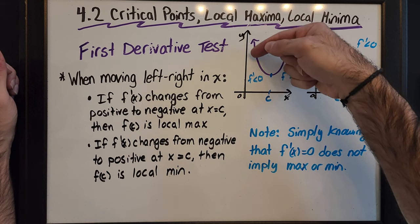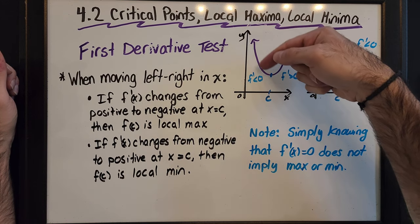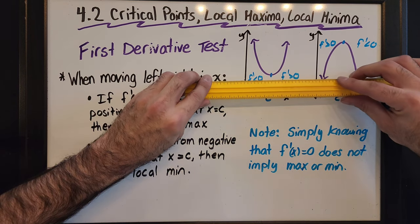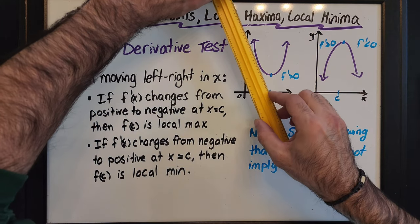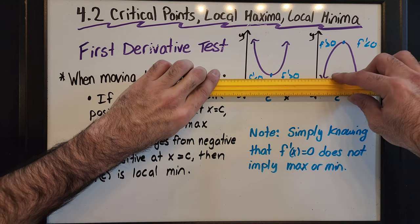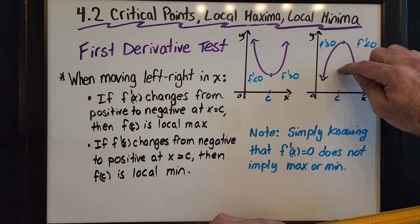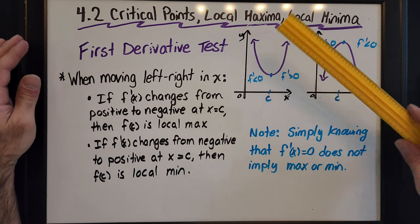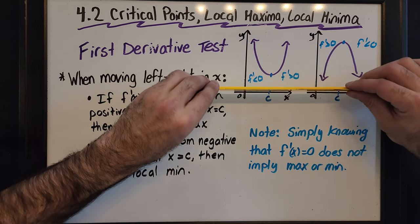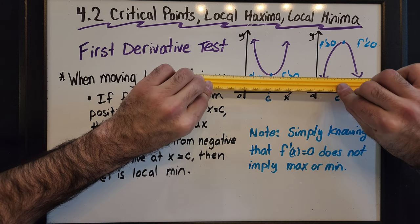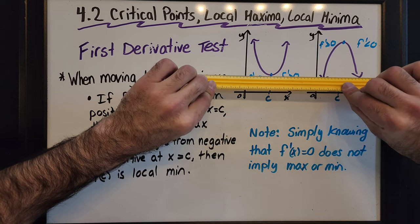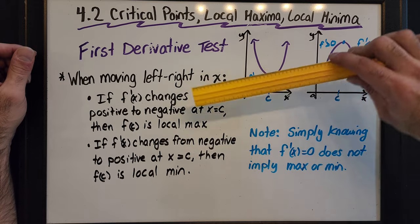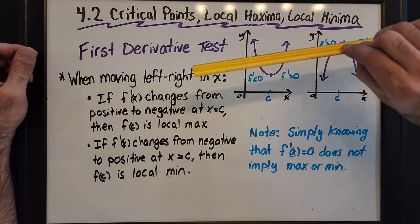Let's take a look at these two graphs. When there's a max, the slopes of all the tangents are negative before the minimum and then become positive — so the tangents go from negative to minimum then positive. Likewise, when we have a local max, we have positive tangents, then zero, then a negative tangent. This means that just because the tangent is horizontal does not mean we have a max or a min.